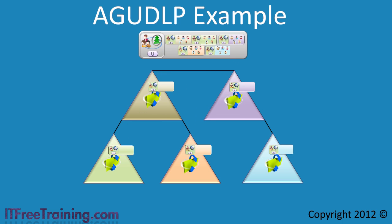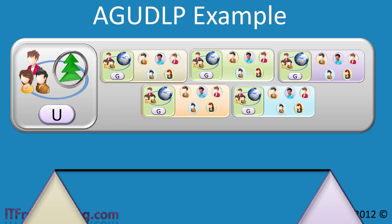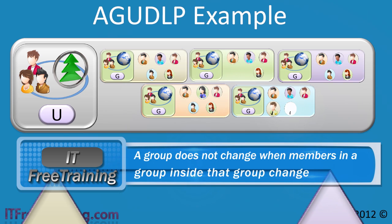Next, these global groups are added to the universal group, which acts as a container for all the global groups. Since you are assigning permissions at essentially the forest level, you want to have some control over this — typically by enterprise administrators. The only work required is changing membership when a new global group is added or removed, which would usually only occur when a new domain is added to the forest. Notice that the universal group only changes when a global group is added or removed; users can be changed in global groups as often as required without affecting the universal group, significantly reducing replication across your forest.